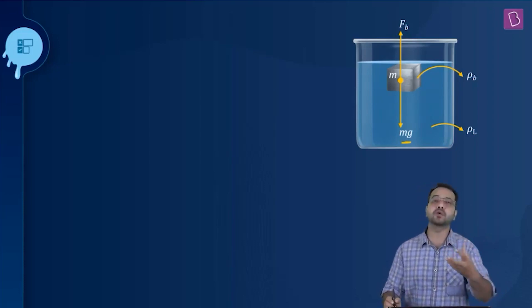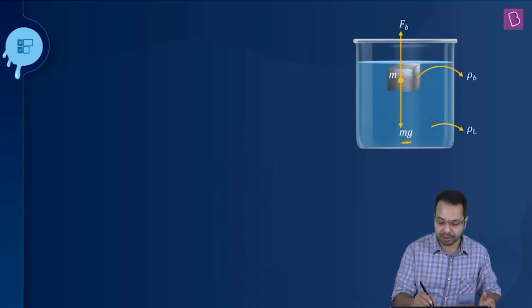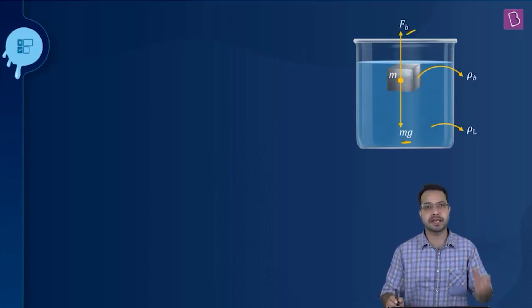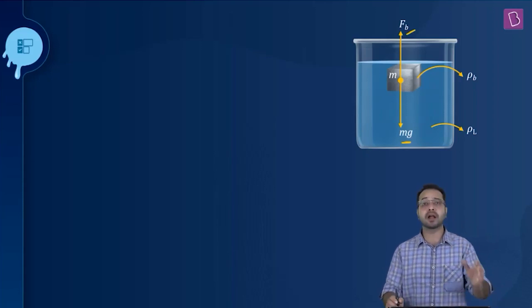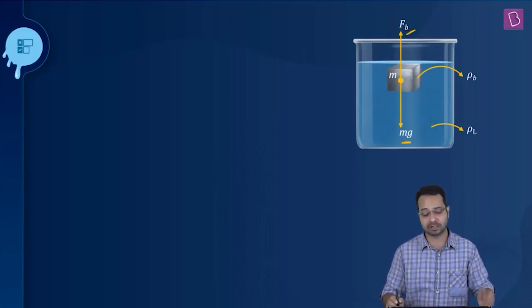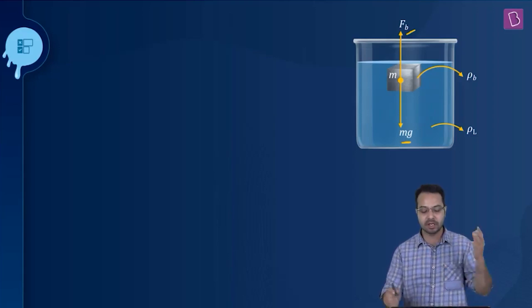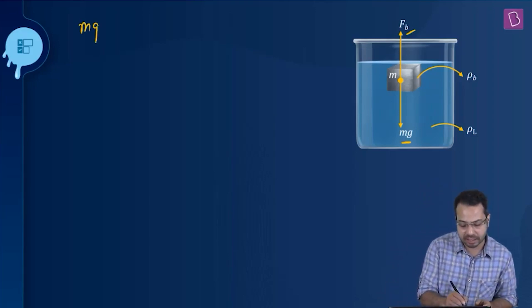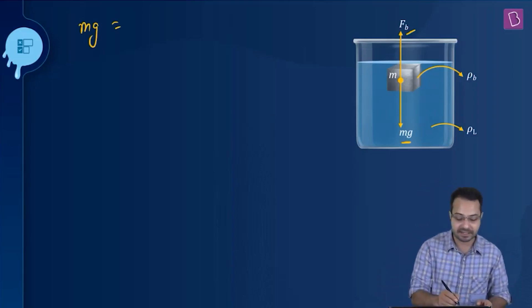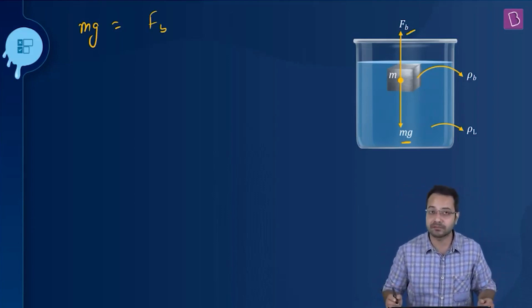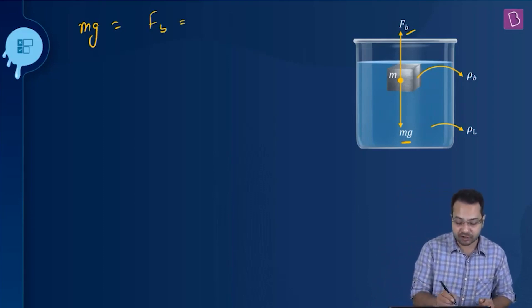The buoyant force which the liquid applies on the body is going to keep it floating. Archimedes' principle tells us that the buoyant force is equal to the weight of the liquid displaced. Writing this as an equation from the free body diagram: mg equals the buoyant force, which should equal the weight of the liquid displaced.